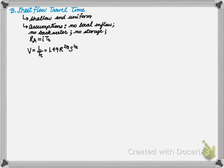The next method is referred to as the sheet flow method. It is based for shallow and uniform flow. It has the following assumptions: no local inflow, meaning water from various locations within the watershed are not entering the system at any time. There is no backwater. If you remember from hydraulics, backwater occurs when water backs up against a bridge or a culvert or a dam, resulting in a water surface profile such as an M1 or an S1.